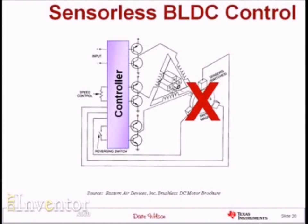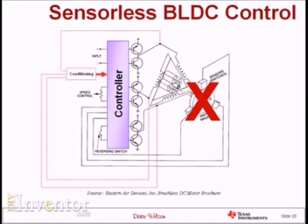Is there another way to get rotor shaft position information without Hall effect sensors? It turns out there are ways to do that. One of them is based upon back EMF sensing. With the way we've talked about driving the motor, we always have one coil that is unenergized, and we can snoop on that coil and listen to the back EMF signature. From that we can get information about where the rotor is. There are lots of different methods, but most are based upon detecting the zero crossing of the back EMF signal.